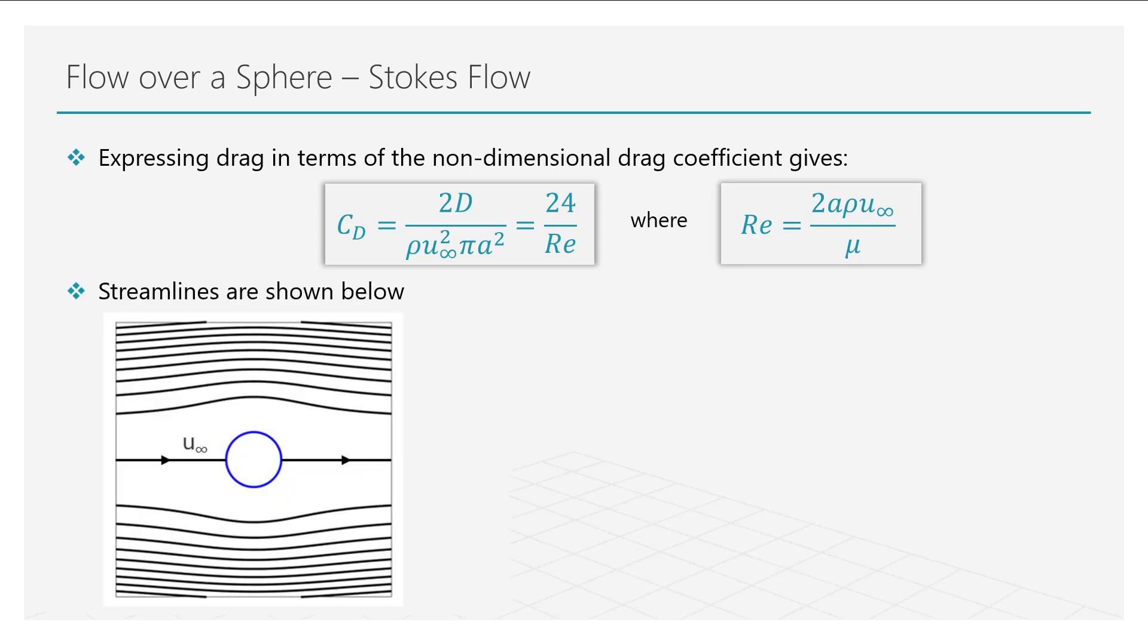Looking at the streamlines for this flow, we can make some very crucial observations. The streamlines and the velocities are independent of viscosity. This is an expected result for creeping flows and mainly stems from the fact that the boundary conditions employed are dependent only on the velocity field.